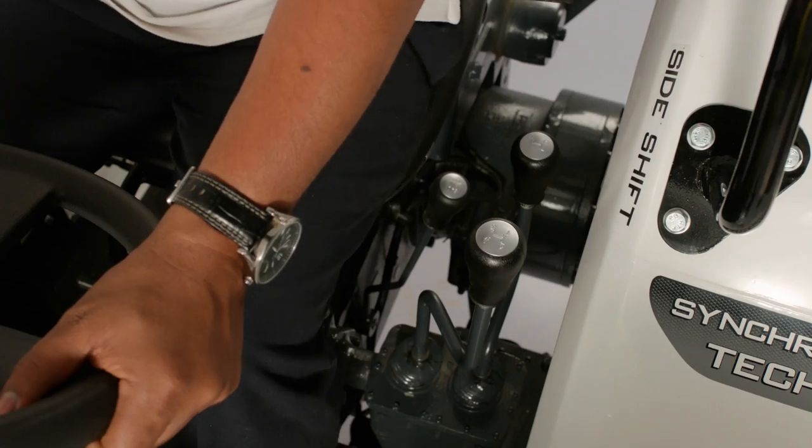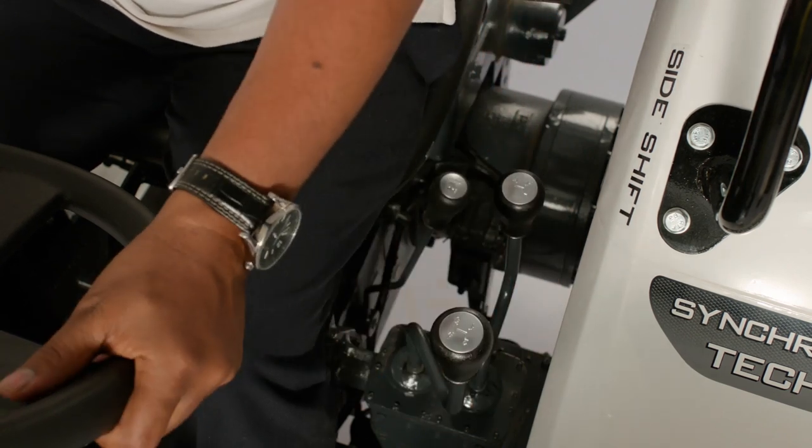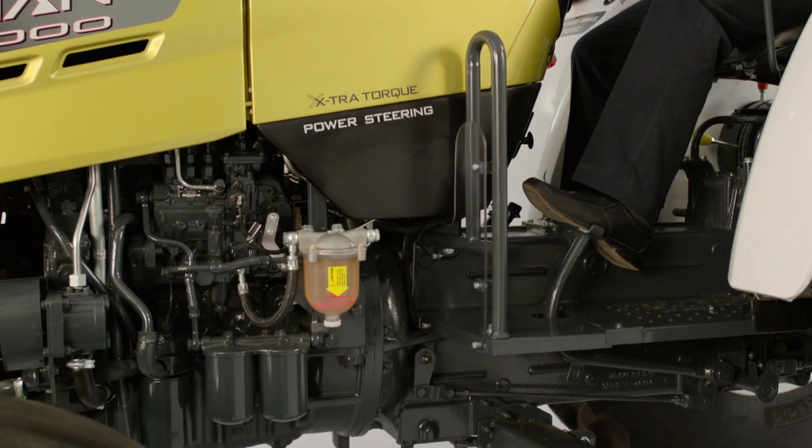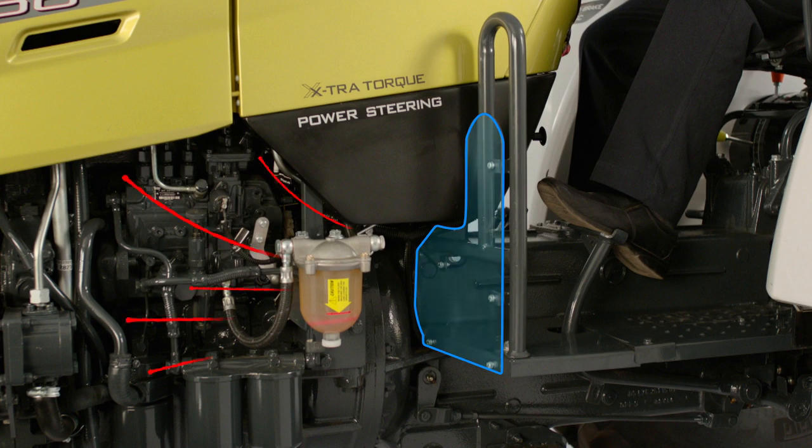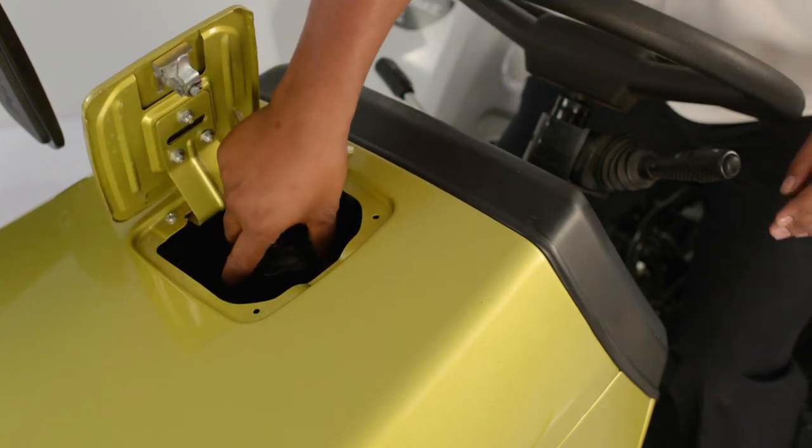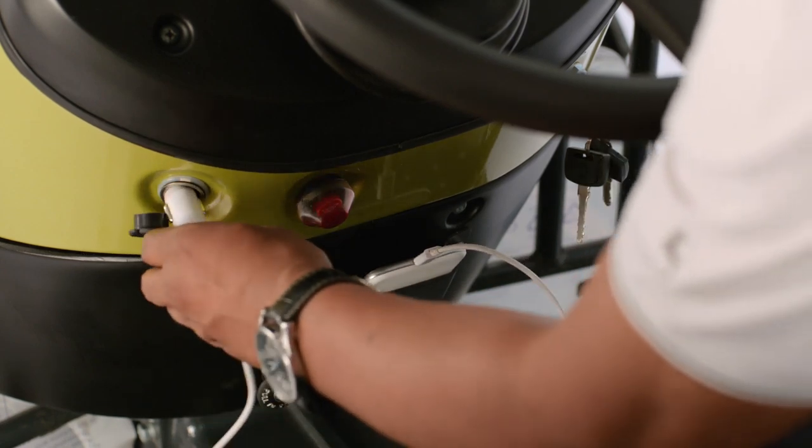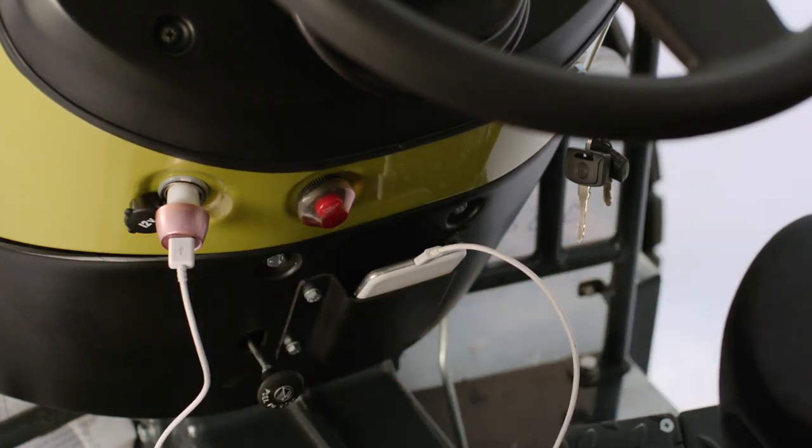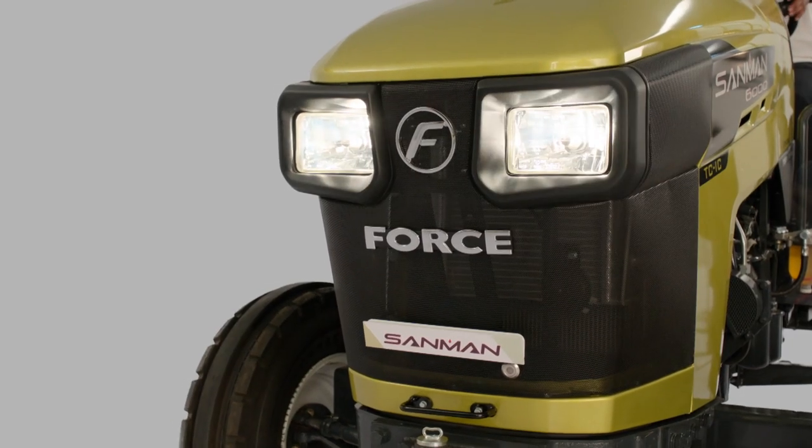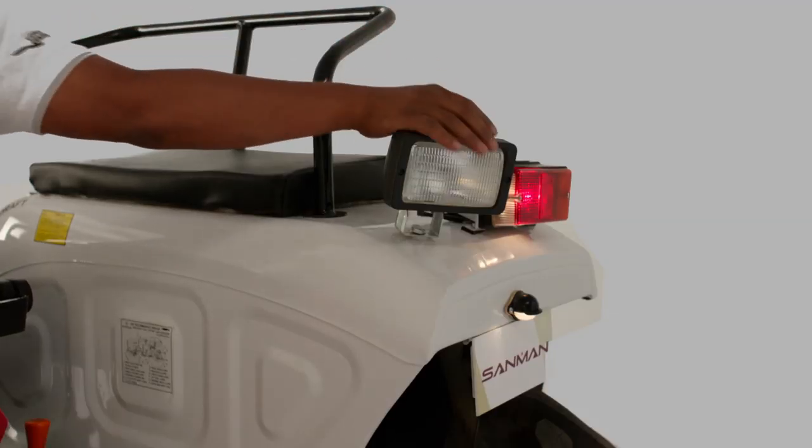Ergonomically placed new side-shift levers that make driving the Sunmark a real joy. The new heat shield prevents flow of hot air from the engine to the operator's feet. The lockable flap on the dashboard protects against pilferage of diesel. The smartphone holder and charger ensure that you always stay connected with your near and dear ones. New, integrated clear lens headlights offer best visibility during night-time operations.